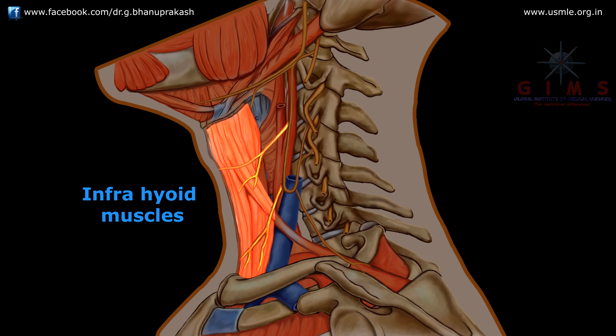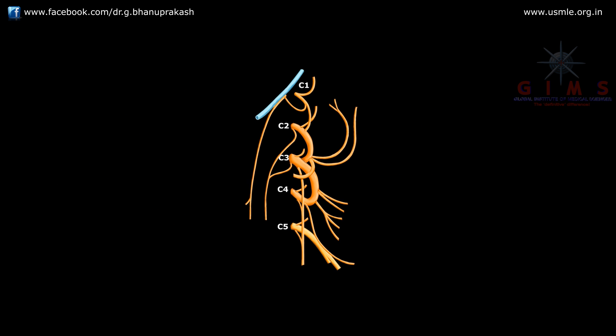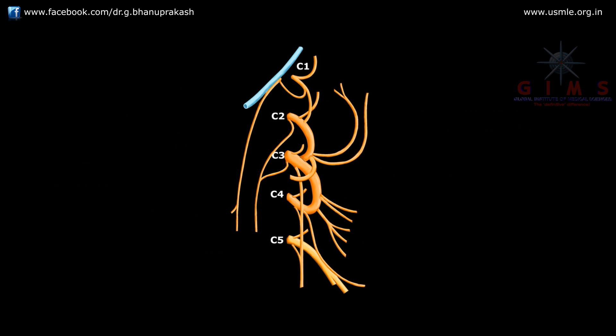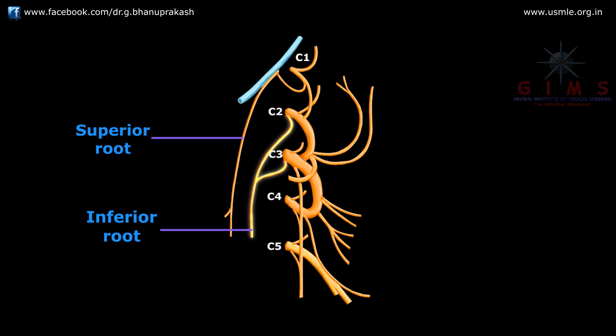Now let us discuss the formation of the ansa cervicalis in detail. The ansa cervicalis is formed by two components: the superior root and the inferior root, which join together to form a nerve loop.